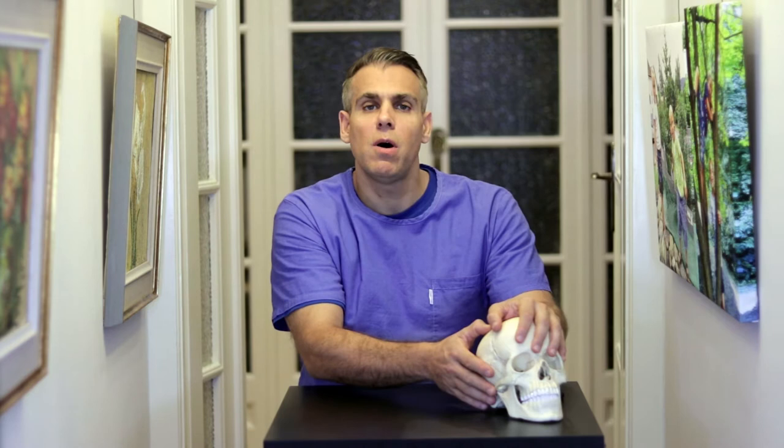Remember that as a part of the TMJ, the condyle undergoes compressive loading, which is why its growth structure is endochondral. The growth structure of the rest of the mandible, however, is intramembranous, with growth and remodeling mediated by localized growth sites.